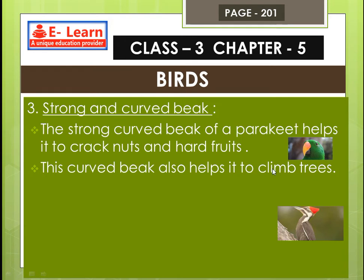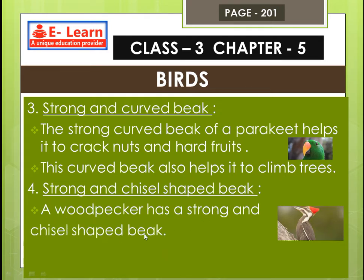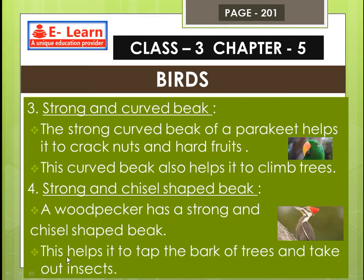Number 4: strong and chisel-shaped beak. A woodpecker has a strong and chisel-shaped beak. This helps it to tap the bark of trees and take out insects. You can see this beak on the woodpecker.